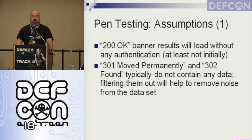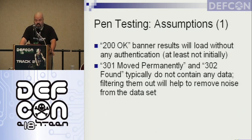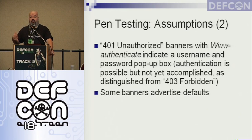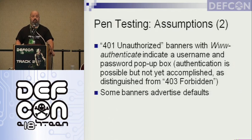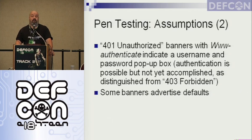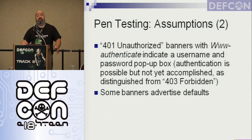301 and 302 in the case of Shodan typically don't provide a lot of data — you could follow where the result moved to, but it's kind of running into the dark without knowing where you're going. We can use Boolean logic filters to filter these out. 401 unauthorized means no permission to view the page, though it doesn't necessarily mean we can't get there. A 401 on a web banner will typically have a www-authenticate line, indicating a pop-up box for username and password. 403 forbidden means we can't go there. It's also important that some banners advertise defaults — we'll see banners that say the password is 1234, which is useful data.